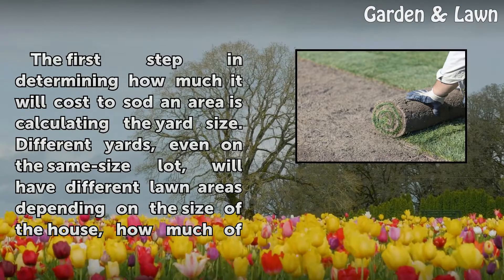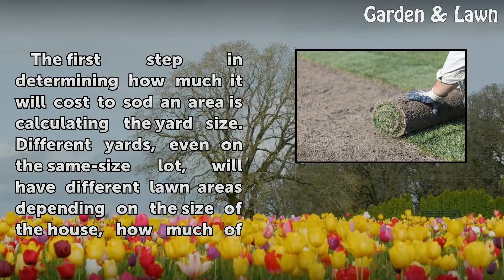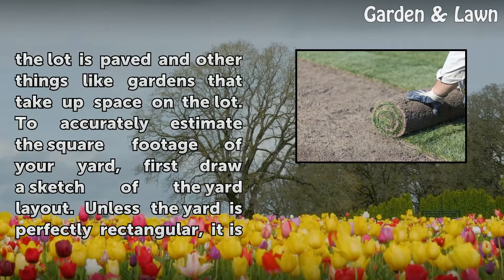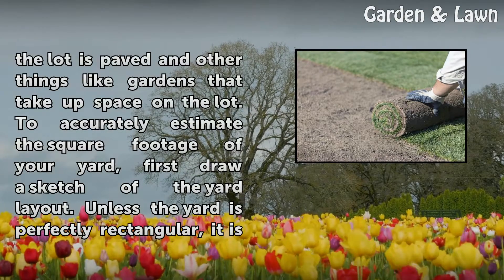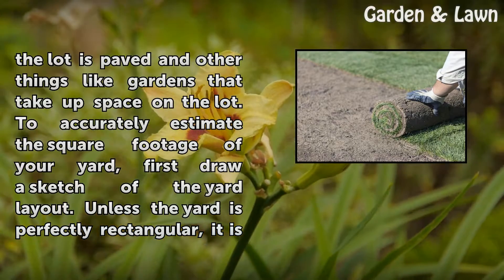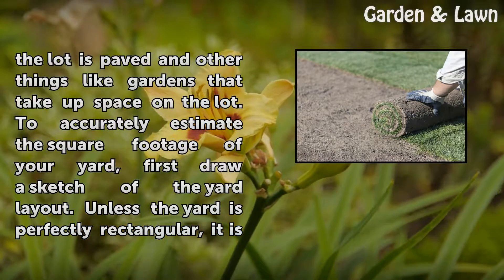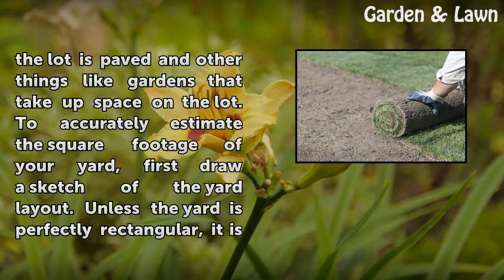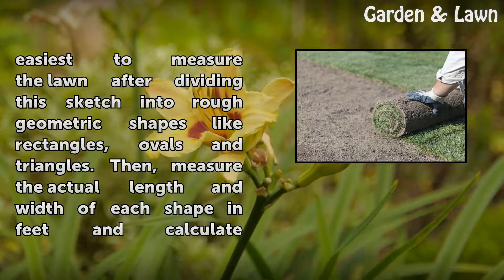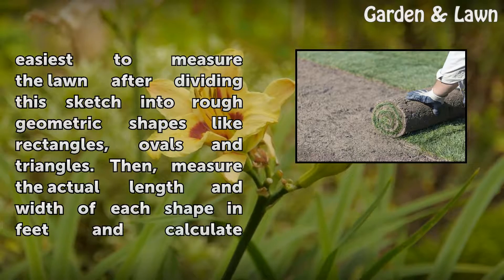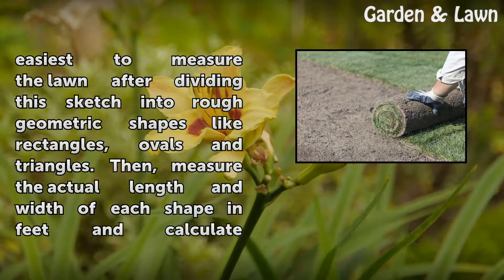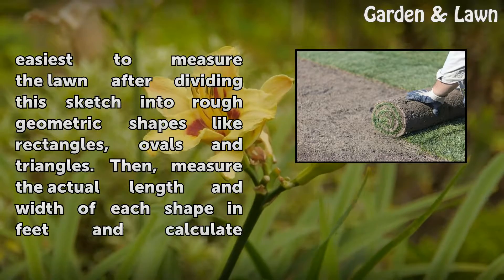Different yards, even on the same size lot, will have different lawn areas depending on the size of the house, how much of the lot is paved, and other things like gardens that take up space on the lot. To accurately estimate the square footage of your yard, first draw a sketch of the yard layout. Unless the yard is perfectly rectangular, it is easiest to measure the lawn after dividing this sketch into rough geometric shapes like rectangles, ovals, and triangles.